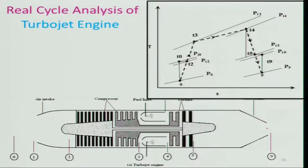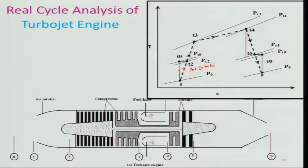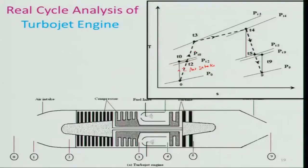Looking at the T-s diagram: from station 0 to 2 is the air intake. In the ideal (isentropic) case, the process is shown as a solid line. The dashed line indicates the real process, which is non-isentropic — and since it is non-isentropic, it cannot be strictly represented on a T-s or P-v diagram, but we draw a dashed line to make it more prominent.